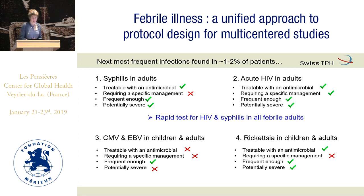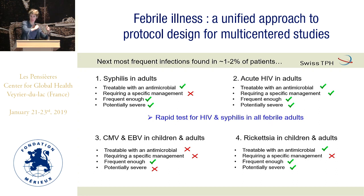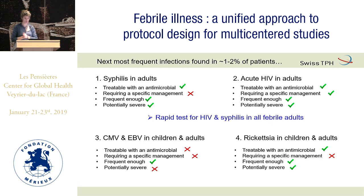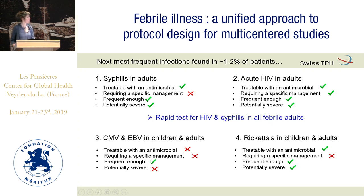The next most frequent infections were CMV and EBV, both in children and adults. In Tanzania, CMV infects young children for the first time, while EBV is more an infection of older children and adolescents. But neither has much criteria to be tested for — I would say these two, we don't really need to test for them.